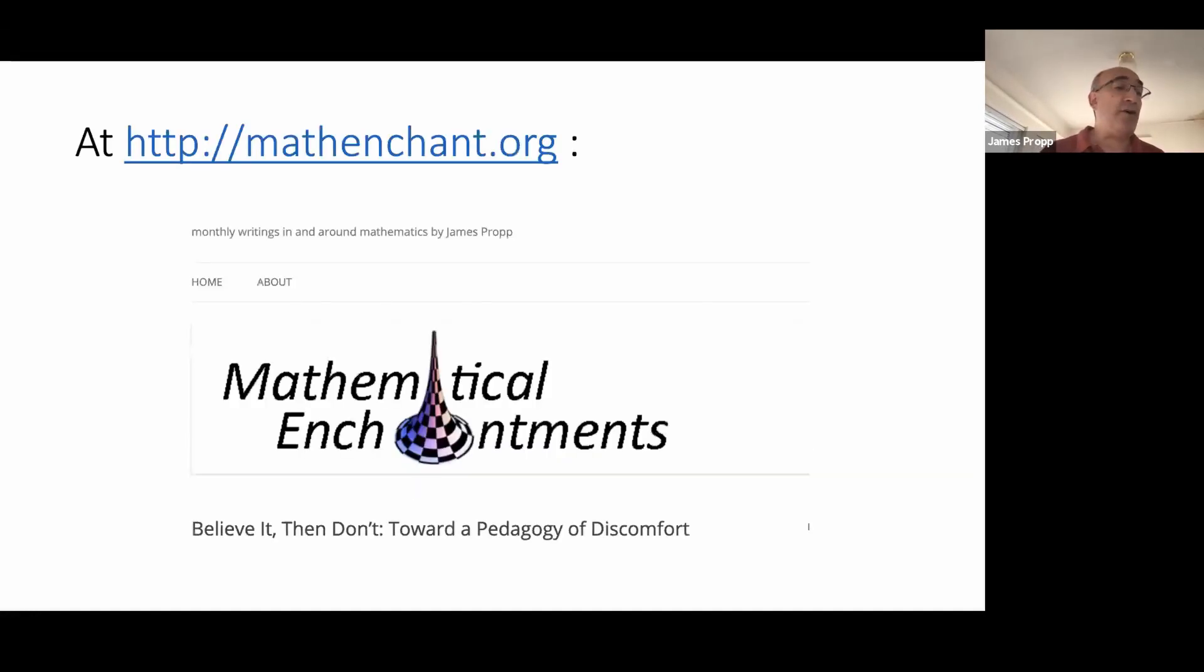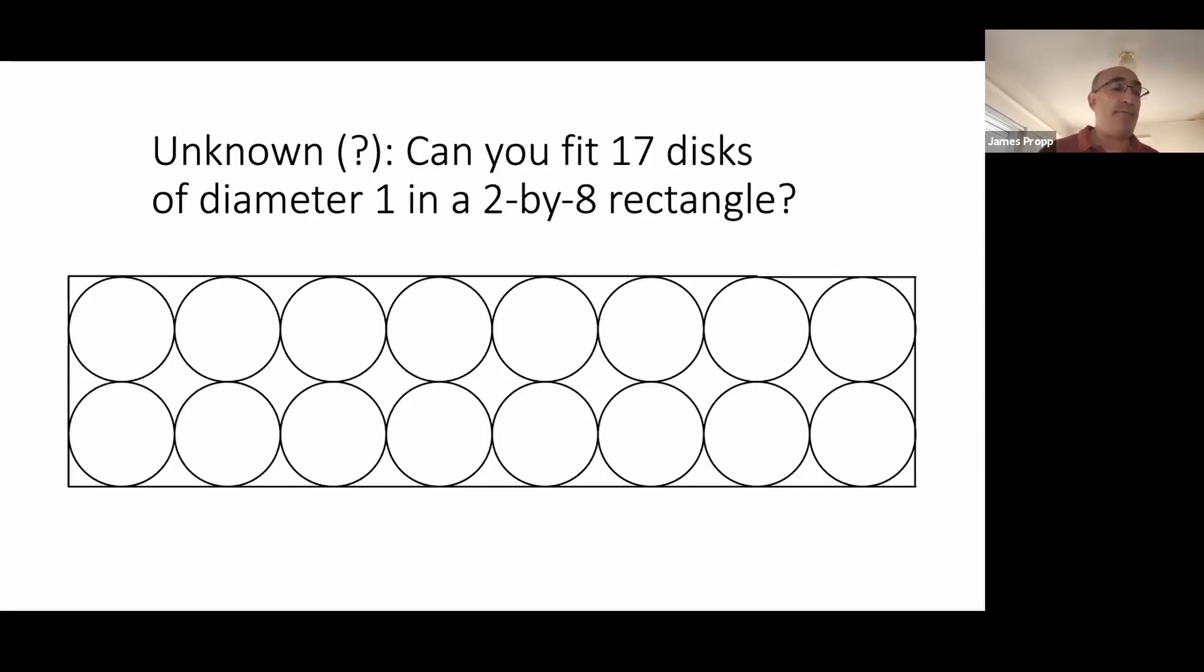So if our goal is not to be fooled, we might want to be careful about saying, oh, that's obvious. So let's back off from n equals 1000 to look at the 2x8 rectangle. Is there a way to pack more than 16 disks of diameter 1 into this rectangle? I don't think so, but I don't know a proof either.